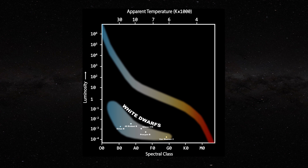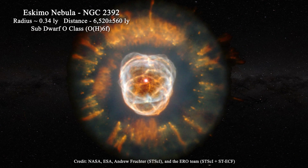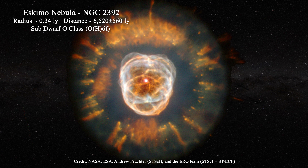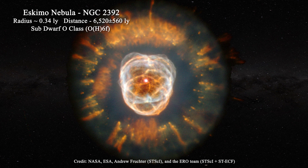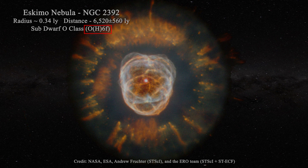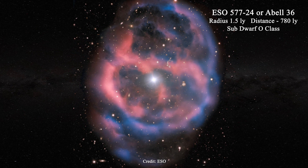We temporarily depart from our analysis of the HR diagram and enter the world of planetary nebulae. Beyond the white dwarfs, the central stars of planetary nebulae can also be sub-dwarf O-class stars, such as found at the center of the Eskimo Nebula, NGC 2392. The central star of this nebula is an O-class star. Consider also ESO 577-24 nebula — it also has a sub-dwarf O-class star at its center.